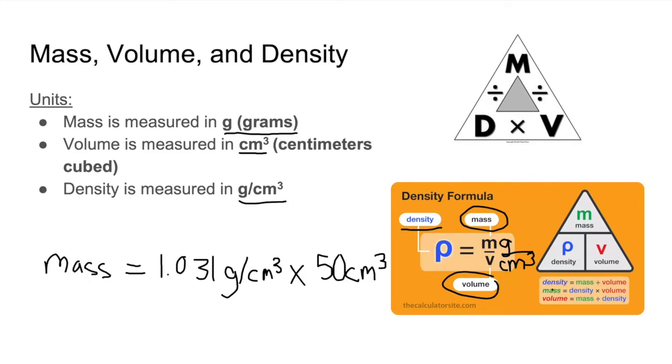We can see that here. So if we're looking for the density, then we do mass divided by volume. If we're looking for the mass, then it's density multiplied by volume. And if we're looking for the volume, then it's mass divided by density.